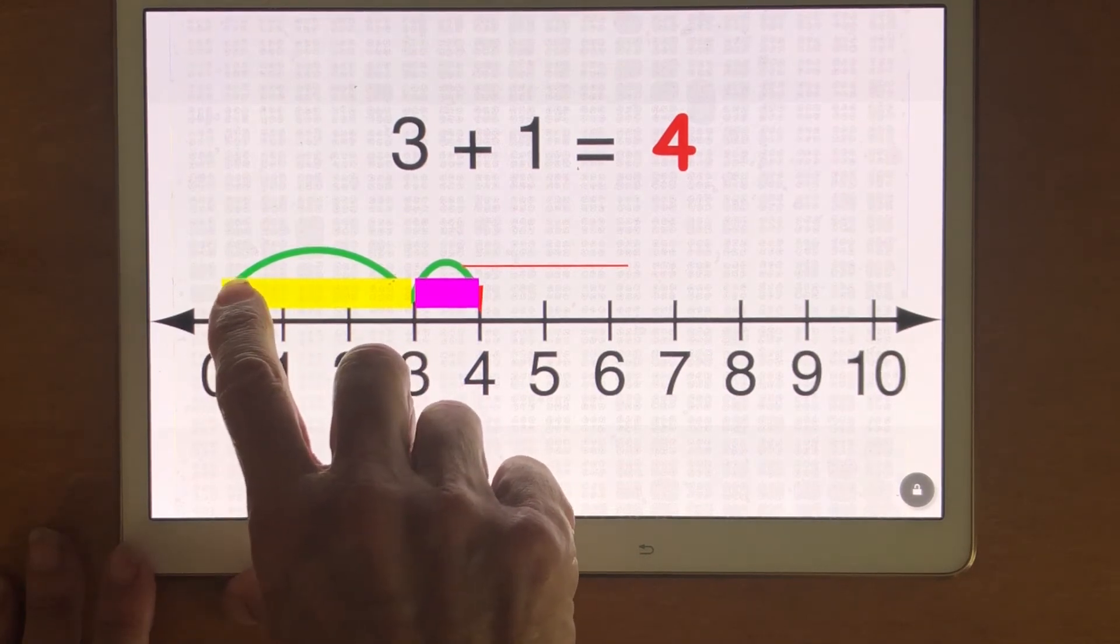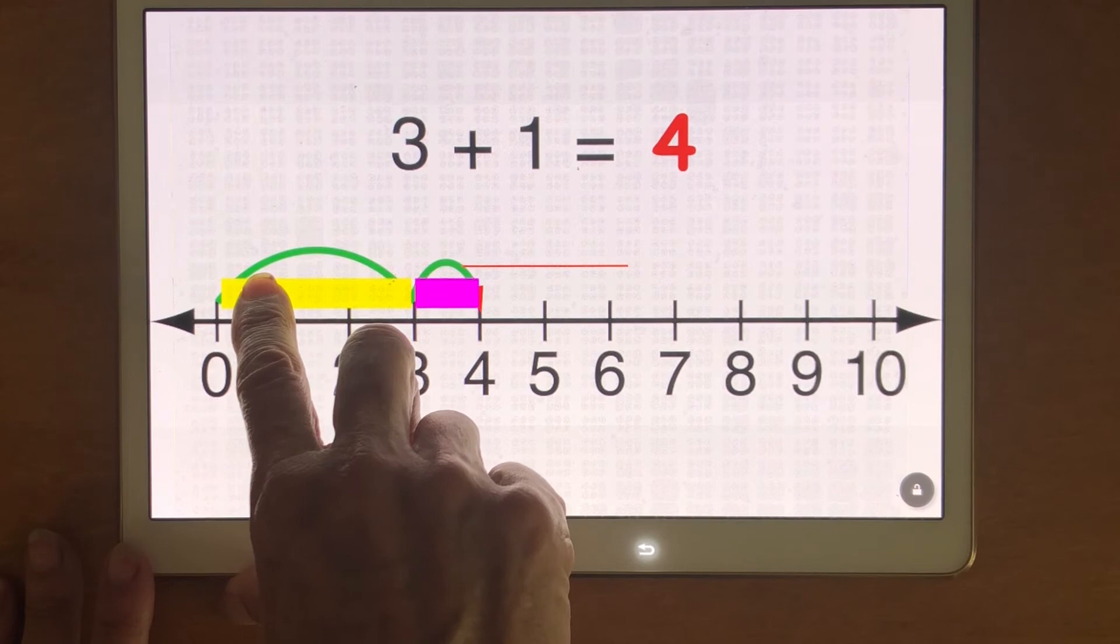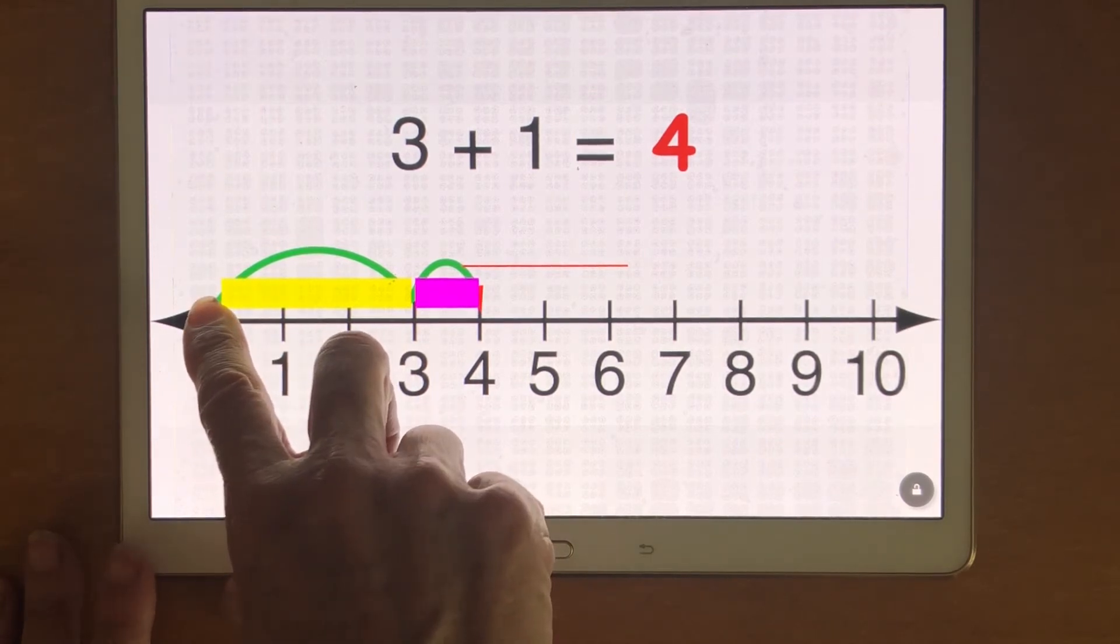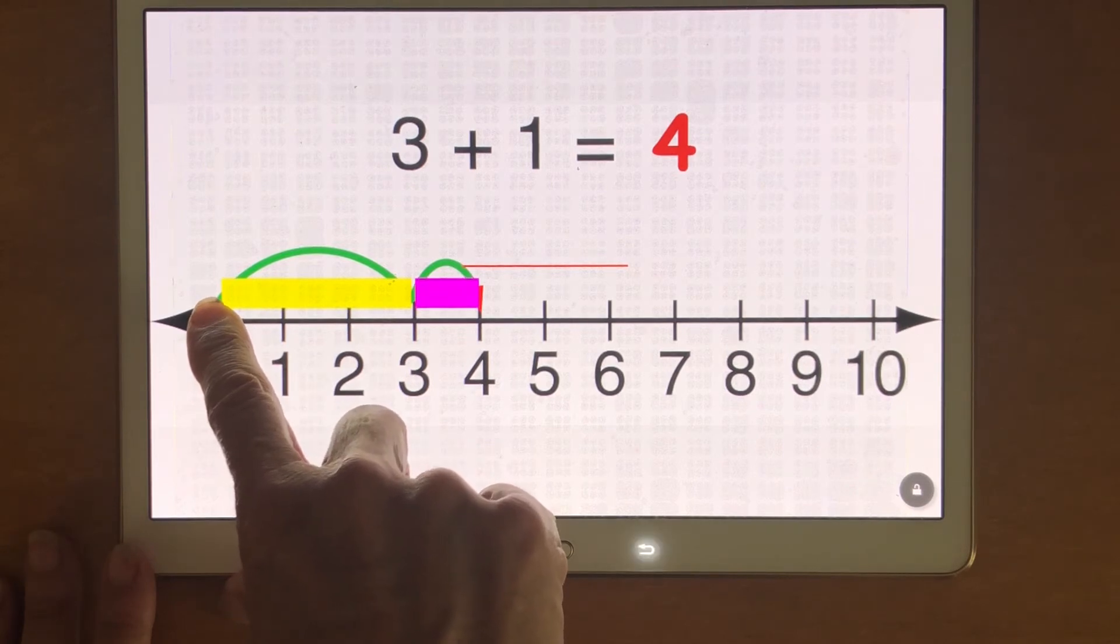So now again I'm going to add three plus one equals four. I'm gonna find the bar above. Oh that's my three. I'm gonna start at zero. I'm gonna get to the number line and I'm gonna count my haptics. I'm starting at zero.